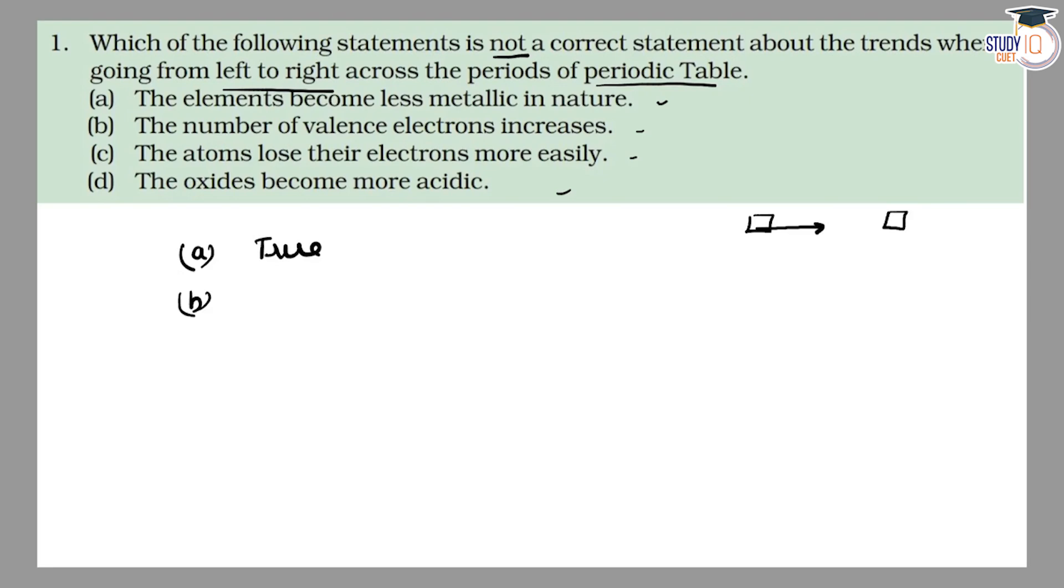Option B: The number of valence electrons increases. This is true. Number of valence electrons increase when we go left to right.